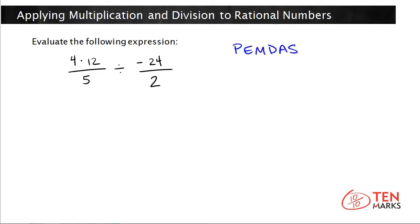This represents the order in which you need to solve. The first priority is to solve anything in parenthesis first, that's the P. The E stands for exponents, so evaluating all exponents is your next step. Then you have multiplication and division, and I'm going to explain why I've grouped those together. And lastly, you have addition and subtraction.